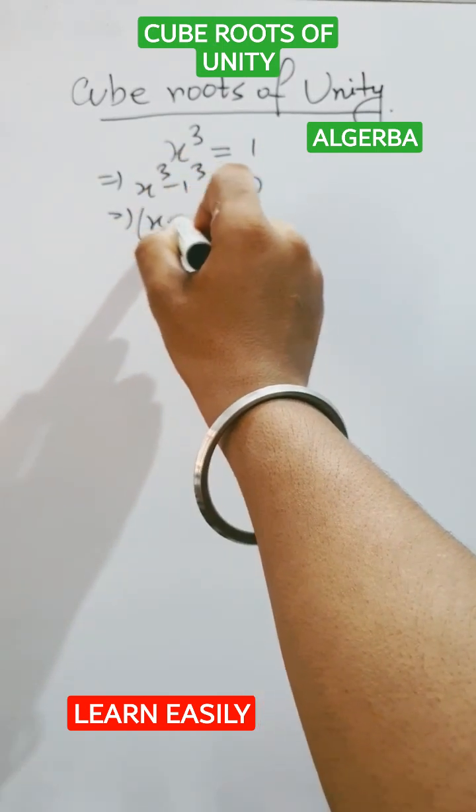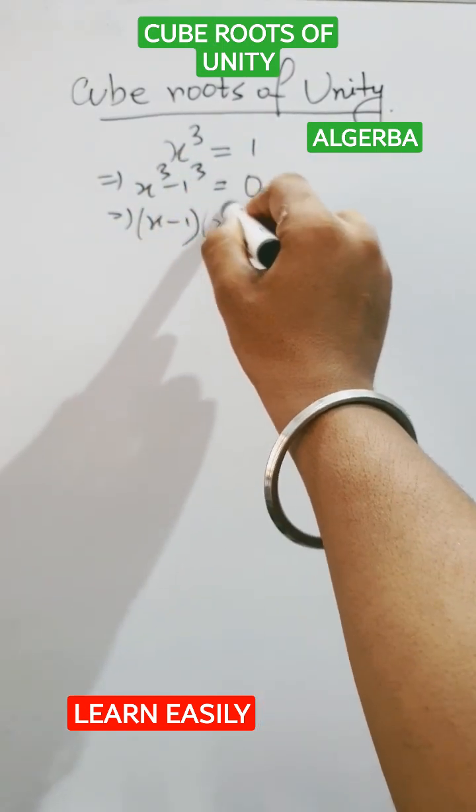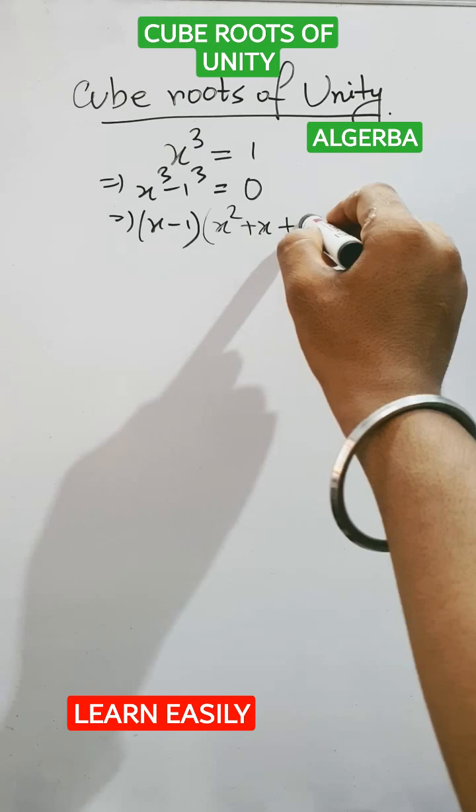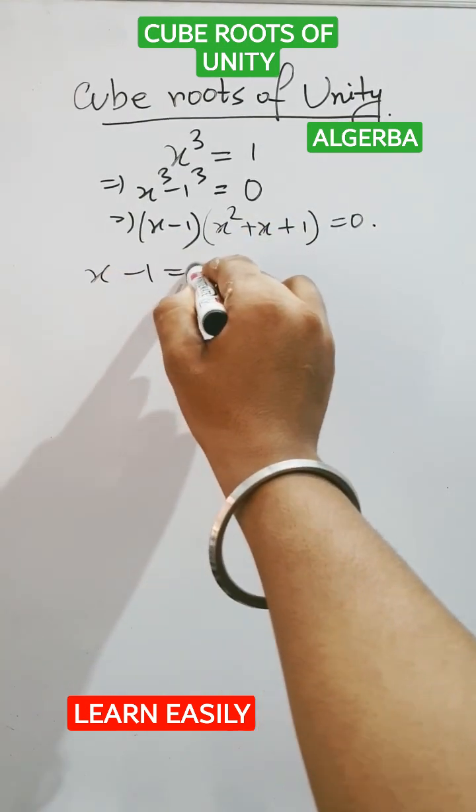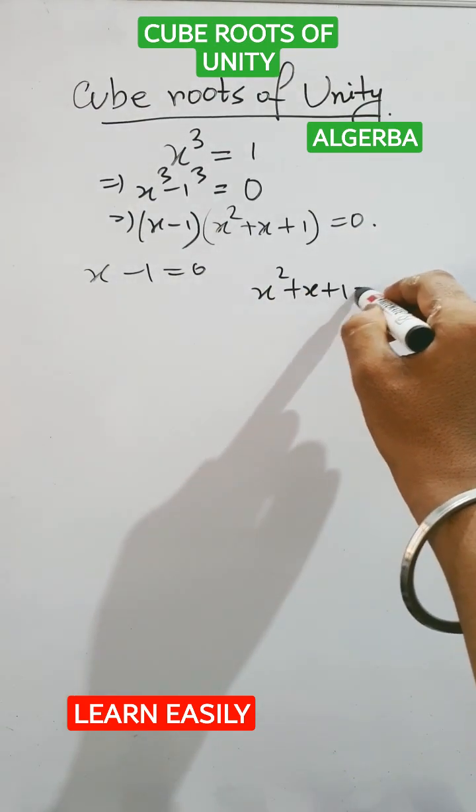So using the cubic property, x - 1 into x² + x + 1 equals 0. This is what we get. Now, x - 1 equals 0, either, or x² + x + 1 equals 0.